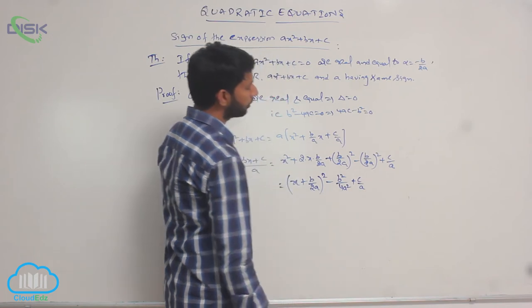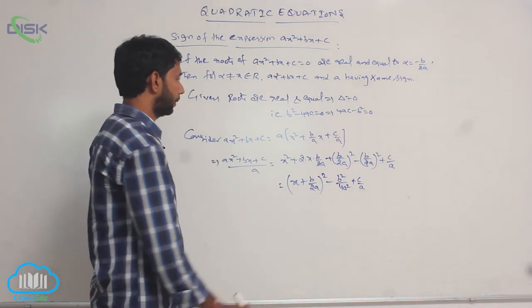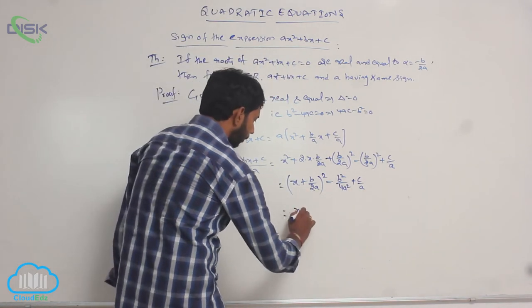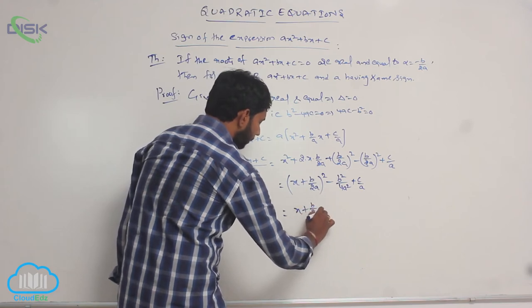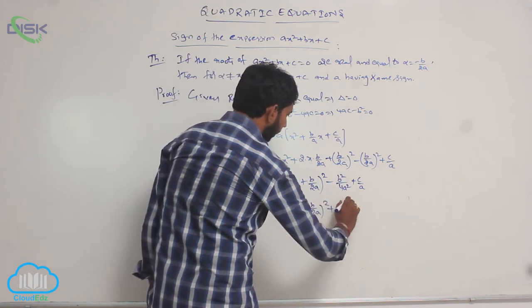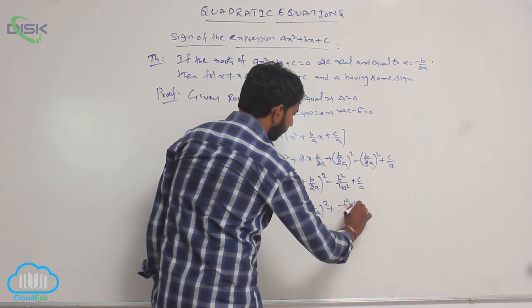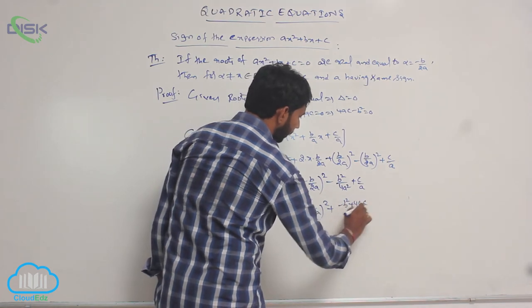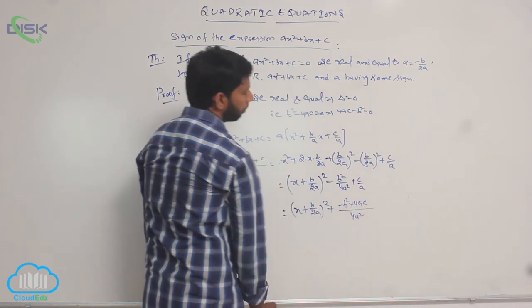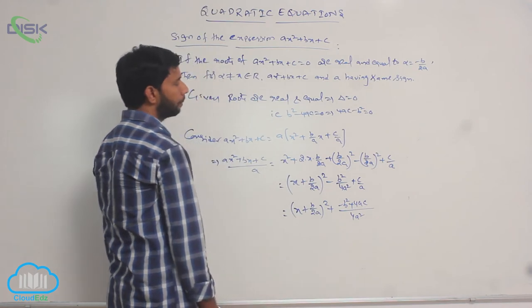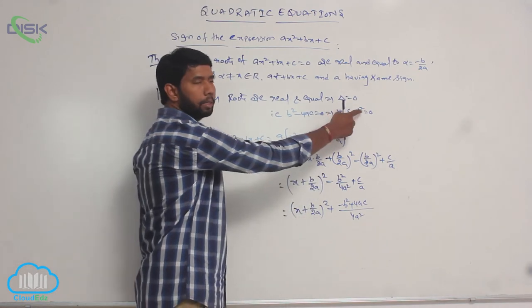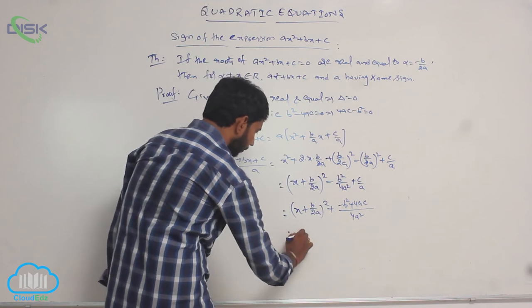Taking LCM of the last two terms, we get (x + b/2a)² + (-b² + 4ac)/4a². That is, (x + b/2a)² + (4ac - b²)/4a². Here, the value of 4ac - b² is equal to 0.